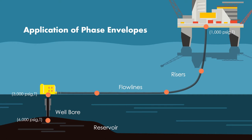We then superimpose that temperature and pressure curve from the flow path on top of the phase envelope, and then we know exactly what kind of flow we would have in the wellbore, at the wellhead, in the flow line, and as we reach the top sides and beyond. That makes it easier for us to plan and size the pipelines.